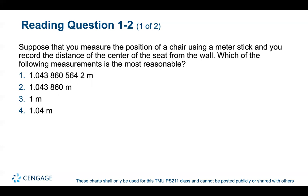Another question: suppose you measure the position of a chair using a meter stick and record the distance of the center of the seat from the wall. Which measurement is most reasonable? Given the resolution of a meter stick, three significant digits is the most reasonable choice.